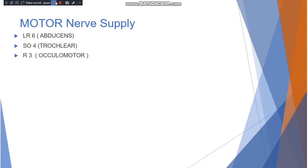The motor nerve supply of the eye muscles is by three nerves: the abducens, the trochlear, and the oculomotor. To remember this: LR6 — the lateral rectus is supplied by the 6th cranial nerve, the abducens; SO4 — the superior oblique by the 4th cranial nerve, the trochlear; and the rest — meaning the remaining rectus and oblique muscles and the levator palpebrae superioris — are supplied by the 3rd cranial nerve, the oculomotor nerve.